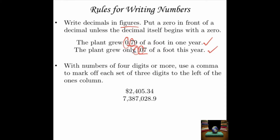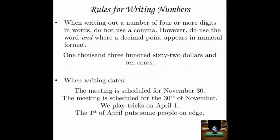With numbers of four digits or more, use a comma to mark off each set of three digits to the left of the ones column — just like you learned in math class. You start at the decimal point and count one, two, three, comma, one, two, three, comma, and so on. It's the same in writing as it is in grammar — for once, something that's the same.